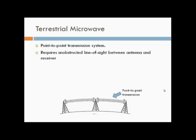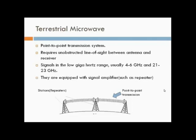Terrestrial microwave systems typically use directional parabolic antennas to send and receive signals in low GHz ranges of usually 4-6 GHz and 21-23 GHz. They are equipped with signal amplifiers such as repeaters at every station, placed at distances of 30 miles to increase distance hop by hop.